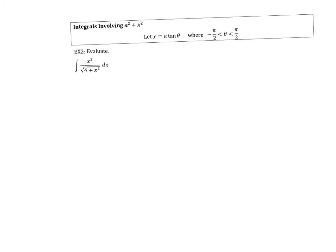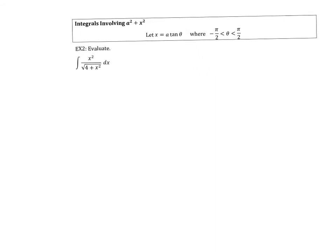Let's look at what happens when we have a squared plus x squared. If it's a squared plus x squared, our substitution is going to be tangent. In example two, a is equal to two, so we're going to let x equal two tangent of theta.